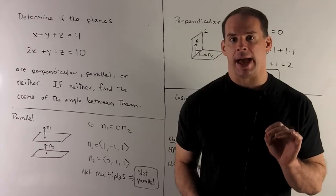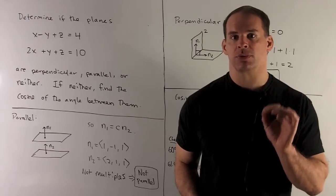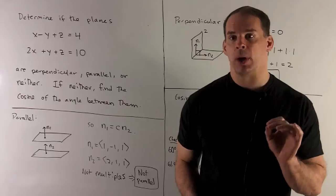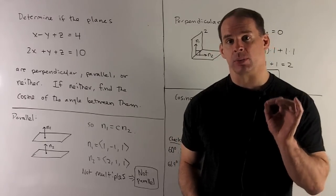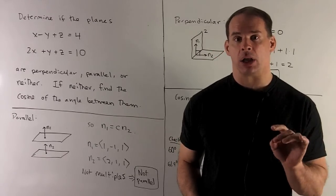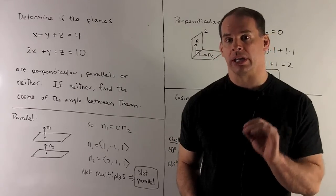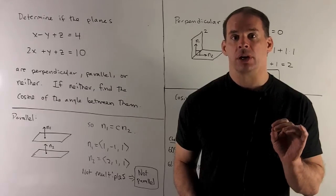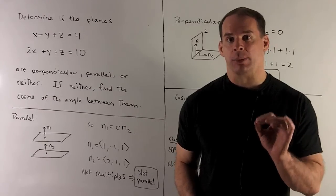Determine if the planes x minus y plus z equals 4 and 2x plus y plus z equals 10 are parallel, perpendicular, or neither. If neither, find the cosine of the angle between them.